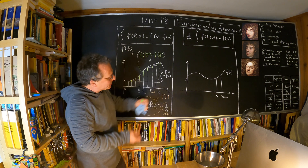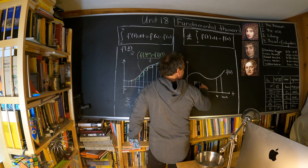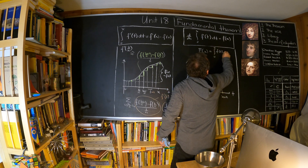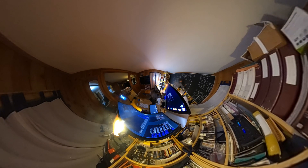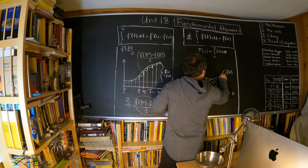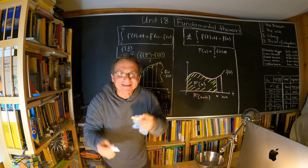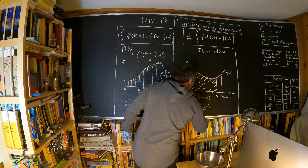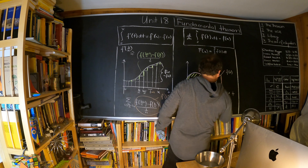The second part is even nicer. When we integrate f(t) from 0 to x, let's call this F(x), so F(x) is the integral from 0 to x of f(t) dt — that's the area. When I take F(x+h) I get this area here. If I take the derivative, I compute F(x+h) minus F(x), divided by h, which goes to the derivative F'(x) = f(x).